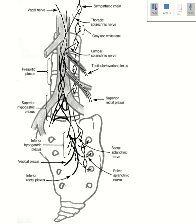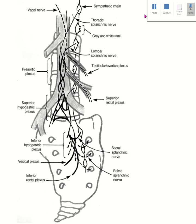The nerve supply of the vas deferens. The vas deferens is innervated by the pelvic nerves — both sympathetic and parasympathetic — which control peristalsis for sperm propulsion. The nerve supply is derived from the autonomic nervous system. Sympathetic nerves arise from the thoracic T10 to lumbar L2 spinal cord segments, with fibers from the lumbar splanchnic nerve passing to the inferior hypogastric plexus.